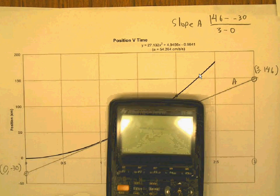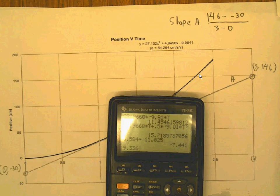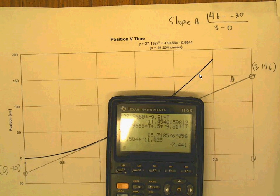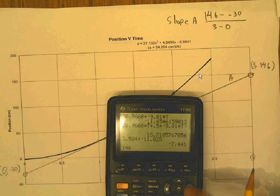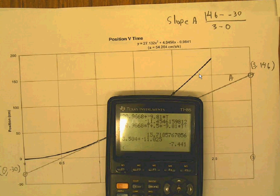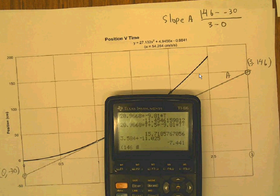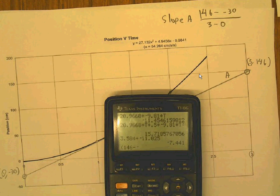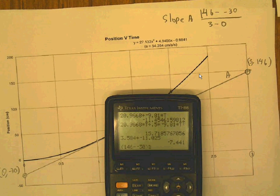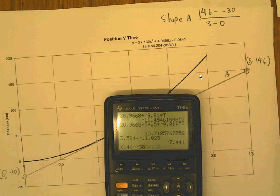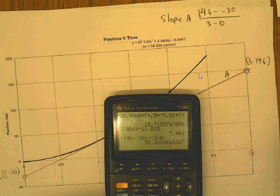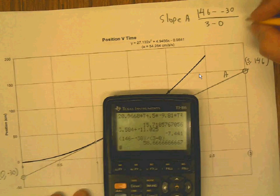I can calculate that. 146, I've got to use parentheses. I'm having a hard time here. 146 minus a negative, I said that was 30. Divided by 3 minus 0. I'm going to get 58.7 roughly, right?